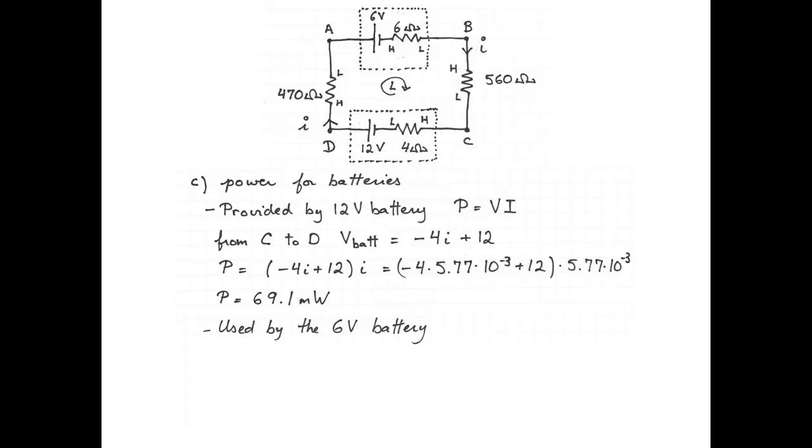Now let's figure out how much power is used by the 6 volt battery. If we add the voltage from B to A across the 6 volt battery, we get 6I plus 6. We count the voltage across the internal resistance of the battery as positive because from B to A, we're going from low potential to high potential. Let's multiply this by the current now. 6 times 5.77 milliampere plus 6, then the whole thing multiplied by 5.77 milliampere is 34.8 milliwatts of power used. And remember, we know that the 6 volt battery uses power because the current is flowing into its positive terminal.